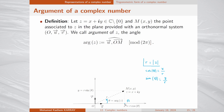Denoting r the modulus of z, consider the triangle OMA. The cosine of θ equals x divided by r, so x = r·cos θ. Keep this important relation in mind. Similarly, sin θ equals y divided by r, so y = r·sin θ.